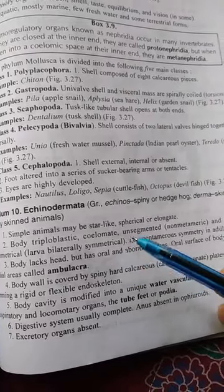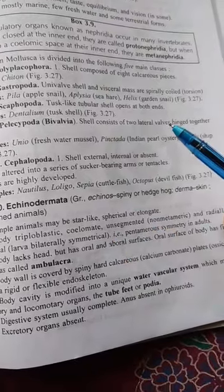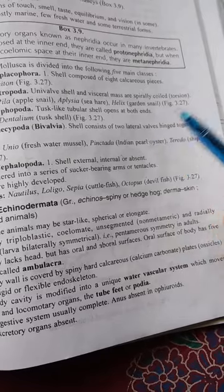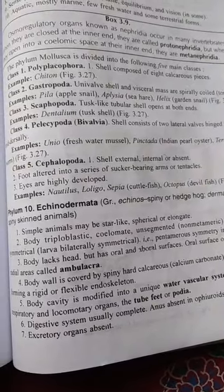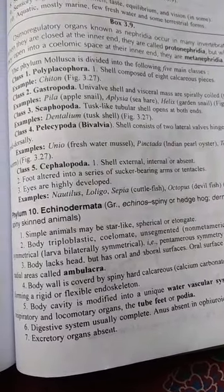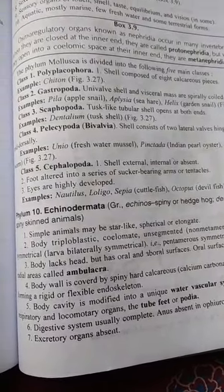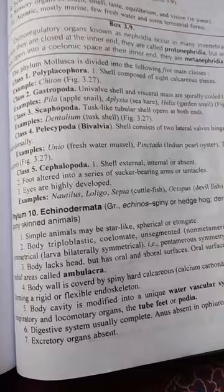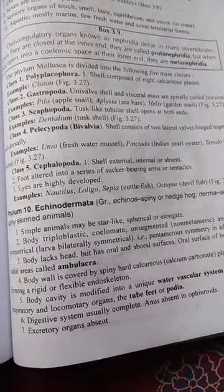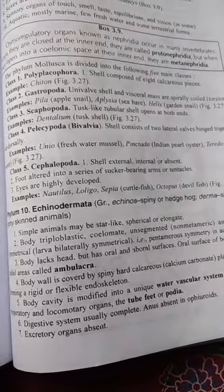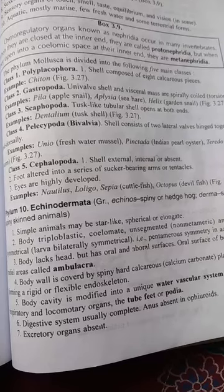The body lacks a head. It has oral and aboral surfaces. The oral surface of the body has five radial areas called Ambulacra.